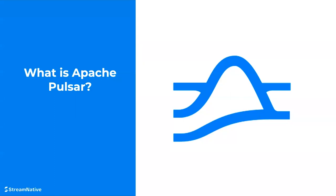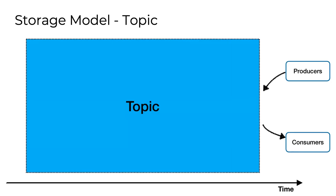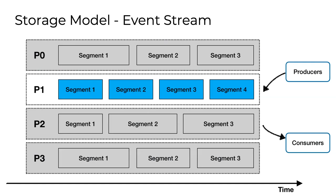So what does this have to do with Apache Pulsar? I work for StreamNative, the company behind Apache Pulsar. One way to think of it: it's an infinite event stream storage. We have a protocol on top, but really it's just infinite stream storage — horizontally scalable, decoupled compute and storage. Our basic model for storing data within Pulsar is a topic where you have multiple producers, multiple consumers, pushing data in as an ordered sequence of events that can grow infinitely. We use what's called segment-based storage.